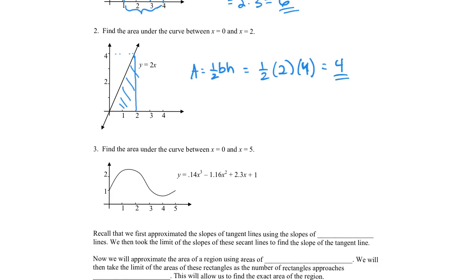Now find the area under this curve between x equals 0 and x equals 5. We want to find this area here. At this point we've got a strange curve, and we definitely don't have any formulas from geometry to help us out. So if we wanted to figure out this area, we're going to need some help.